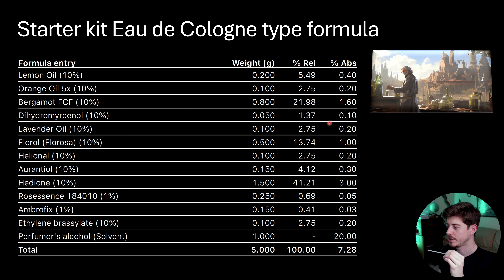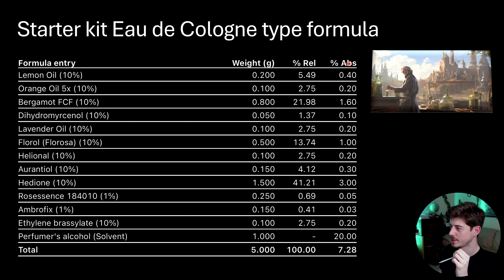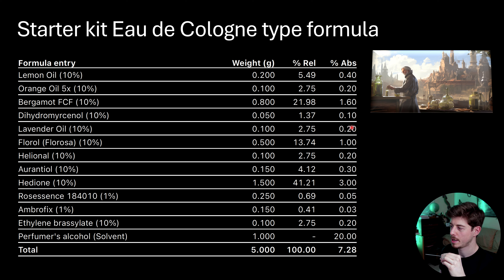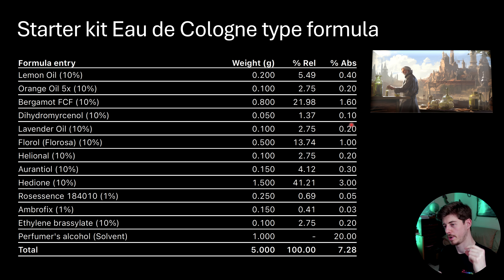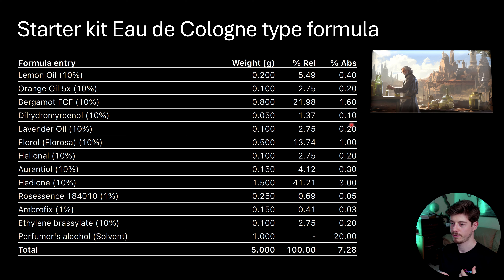Then we've got lavender oil — just a small dash. The total citrus concentrations add up to about 2.2%, while the lavender is just 0.2%, so it's about 10% the amount of the citrus oils. It's a much smaller component that just adds a little twist to the formula without actually dominating the character.